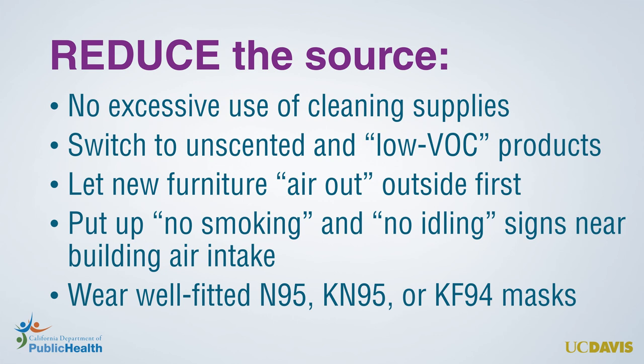For example, when we're cleaning, we can be mindful to use only what's needed, not excessive amounts of products. Remembering that VOCs are a type of gas pollutant that typically has a smell, we can switch to products that are unscented or labeled low VOC when purchasing things like cleaning supplies, building materials, and paints. This means these items only release a low amount of pollutants into the air. For things like new furniture that release chemicals in a process called off-gassing, we might let them air out outside for a bit before bringing them inside, waiting until the amount of chemicals they release is reduced.